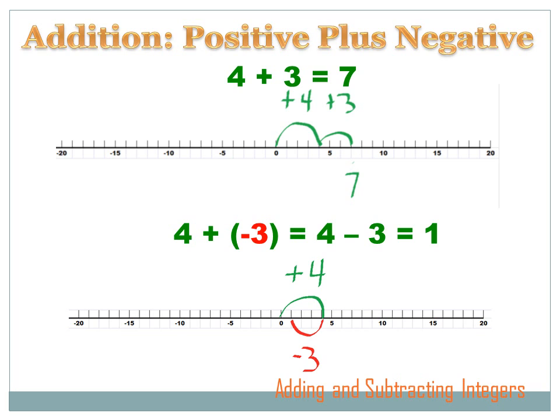How is that different from four plus negative three? Clearly, four plus negative three and four plus positive three couldn't be the same thing. You start at zero and move four to the right — just as before. But now, instead of having a positive three, you've got a negative three. So instead of going right, you go left: one, two, three, and you end up at one.